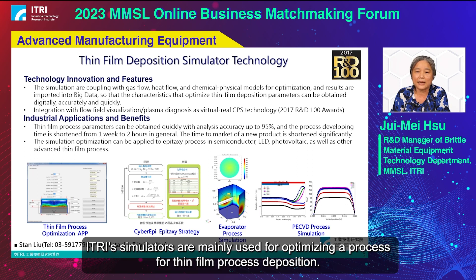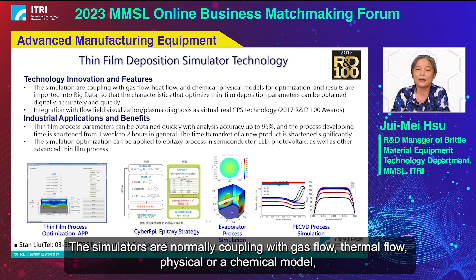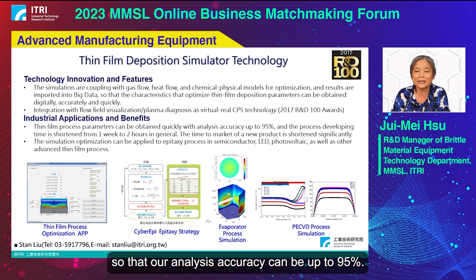E-tree simulators are mainly used for optimizing a process for thin film deposition. For example, plasma enhanced chemical vapor deposition, evaporator deposition, or epitaxy process. The simulators are normally coupled with gas flow, thermal flow, and physical or chemical models, so that our analysis accuracy can be up to 95%.